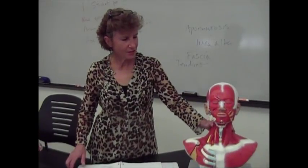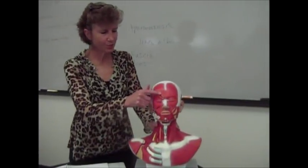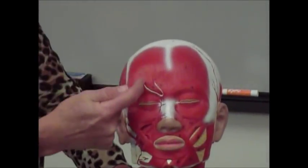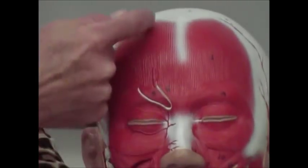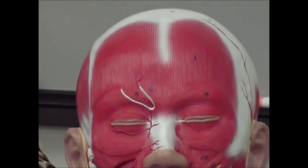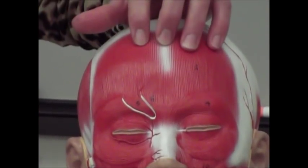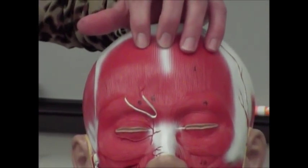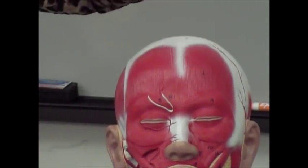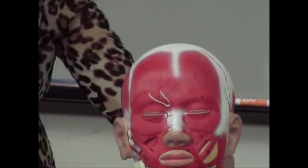Today we're going to talk about the muscles of the head. We're going to start with the frontalis muscle. It covers the frontal bone here. Notice the direction of the fibers — they're running up and down. When muscles contract, they shorten. So those fibers are going to pull up, and the action will be to raise the eyebrows. Frontal bone, frontalis muscle, and when it contracts or shortens, it's going to raise the eyebrows.